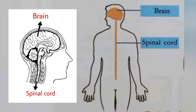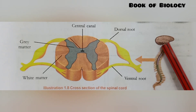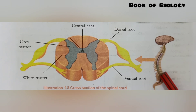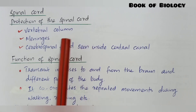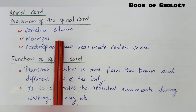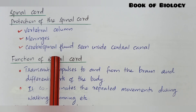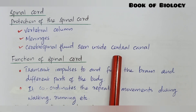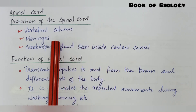The spinal cord is the continuation of the brain — specifically, the medulla oblongata continues as the spinal cord. You can see the spinal cord continuing from the brain. The spinal cord is protected inside the vertebral column, and it is also covered by meninges and contains cerebrospinal fluid inside the central canal.